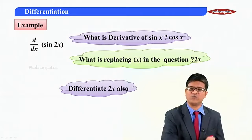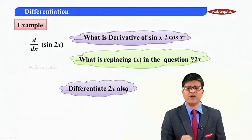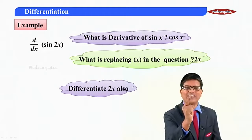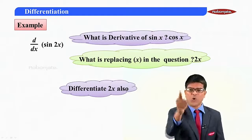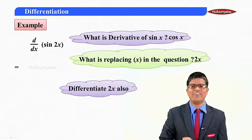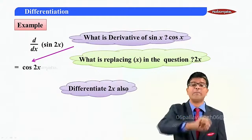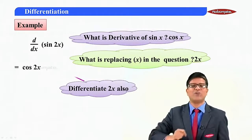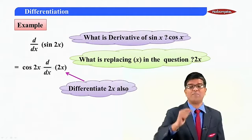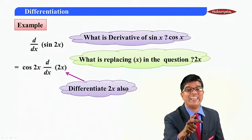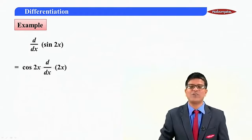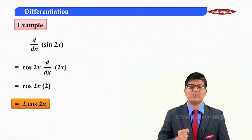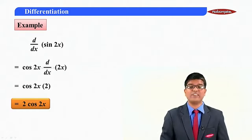Differentiate 2x also. So, is this a basic function? No. Which standard form? Sin x. What is the derivative of sin x? Cos x. So the derivative of sin 2x will be cos 2x. What is replacing x in the question? It is 2x. So differentiate 2x also — that is d by dx of 2x. The derivative of kx is k, so the derivative of 2x is 2. Therefore the answer is 2 cos 2x. So we have understood the chain rule of a composite function.